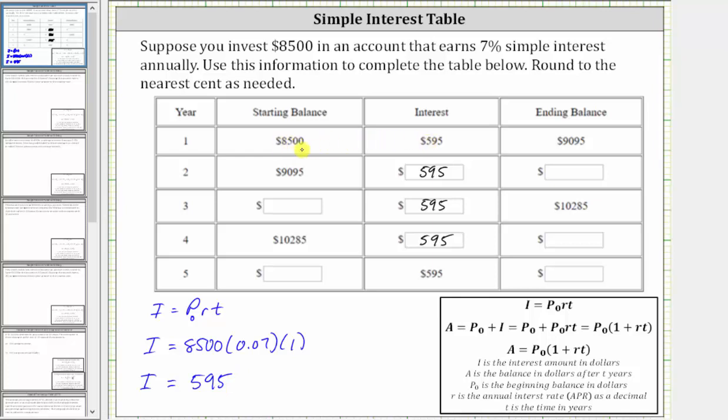We can sum these two amounts to check 9,095, but let's also use the second simple interest formula, where A is the balance in dollars after T years, P sub zero is the starting balance, R is the annual simple interest rate as a decimal, and T is time in years.